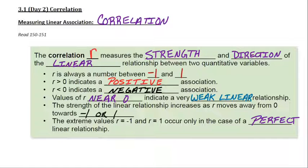So 0 means not very linear, and the closer you get to the endpoints, 1 or negative 1, that means the data points are almost in a perfect line.